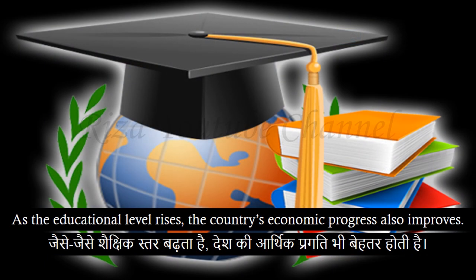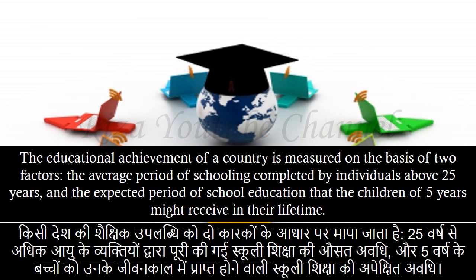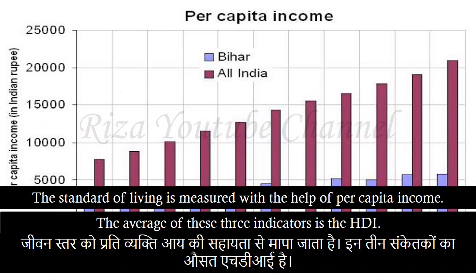As the educational level rises, the country's economic progress also improves. The educational achievement of a country is measured on the basis of two factors: the average period of schooling completed by individuals above 25 years, and the expected period of school education that children of 5 years might receive in their lifetime. The standard of living is measured with the help of per capita income. The average of these three indicators is the HDI.